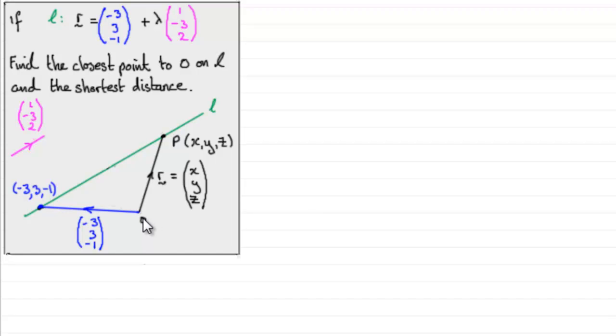And how do we do problems like this? Well, I've got an example here as you can see. I've got an equation of a line L. We've got that the position vector of any point,